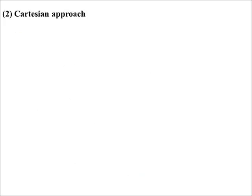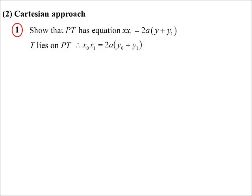If I take a Cartesian approach. So now, PT, like we did yesterday, the equation PT is XX1 = 2A(Y plus Y1). But I know T, the external point, lies on that. Therefore, when I substitute it in, I get this statement. And it must be true. X0 times X1 is equal to 2A(Y0 plus Y1). It must be true because T is also on the tangent.